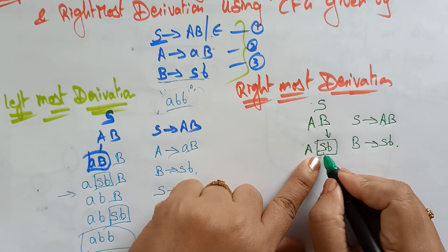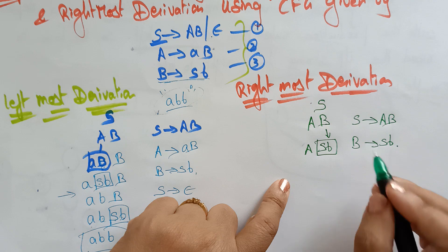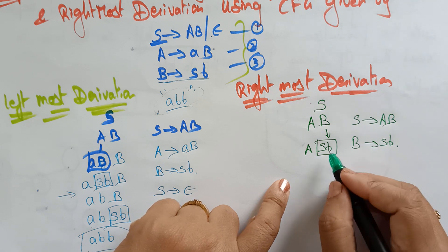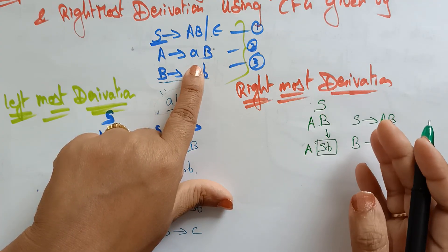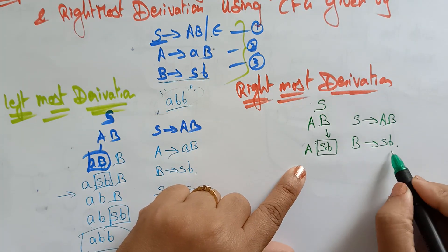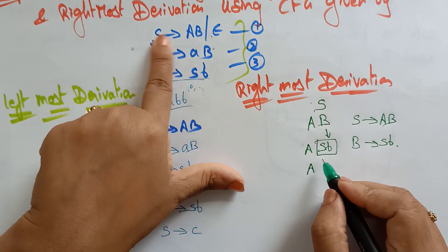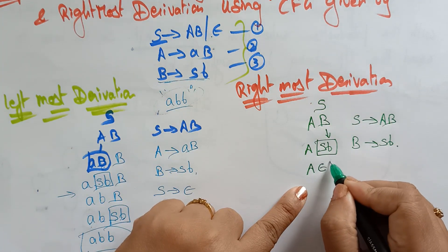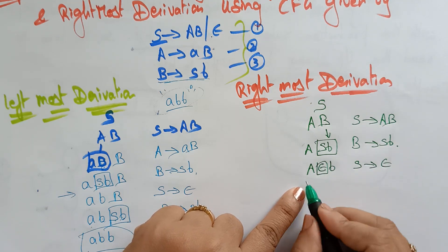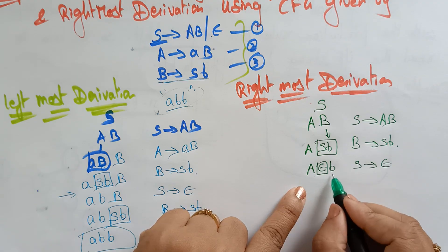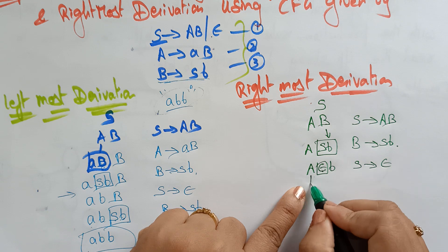In the rightmost derivation, B is replaced with SB. Now in place of S, I am writing epsilon. So epsilon B — S is replaced with epsilon. Epsilon is an empty string, so you get 'aB'. The remaining non-terminal is A, so in place of A you write 'ab'.